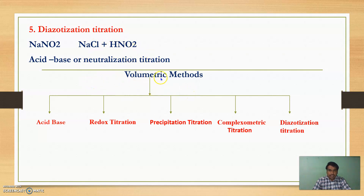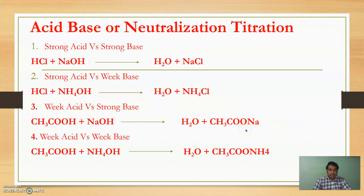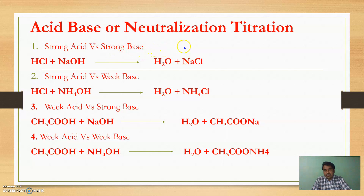These are the Volumetric Methods: Acid-Base or Neutralization Titration, Redox (also called Oxidation-Reduction Titration), Precipitation Titration, Complexometric Titration, and Diazotization Titration. Now, firstly, we see Acid-Base or Neutralization Titration. Here, simply, we titrate one acid with a base to give water plus salt. These acid-base titrations are further divided into four types.